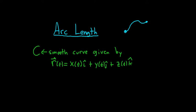Then the arc length is given by the following formula. So little s, this will be the arc length. It's equal to the definite integral from a to b of the magnitude of the derivative of our vector-valued function, dt. So the derivative of the vector-valued function is just x prime i-hat plus y prime j-hat plus z prime k-hat.